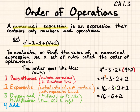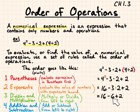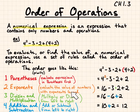Fourth is addition and subtraction. They're at the same level, but you read them from left to right as well — add or subtract from left to right. Here I would do 16 minus 6 first, which gives me 10. Then I do 10 plus 2, which gives me 12. So the value of this numerical expression, using the agreed upon order of operations, is 12.